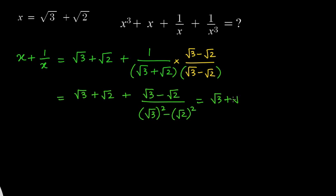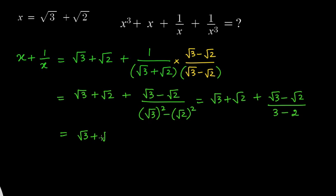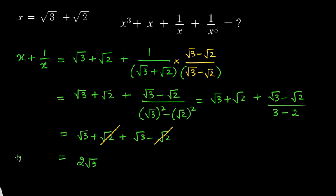So we have root 3 plus root 2 plus (root 3 minus root 2) divided by root 3 squared minus root 2 squared. Root 3 squared is 3, root 2 squared is 2, so the denominator becomes 1. We need not write the 1, and here the plus root 2 and minus root 2 cancel out, so root 3 plus root 3 becomes 2 times root 3. So the value of x plus 1 by x is 2 root 3.